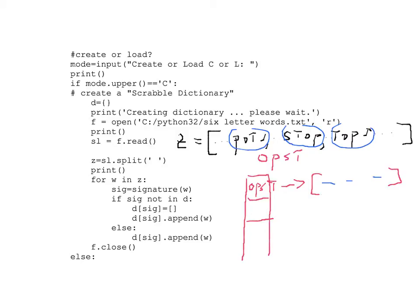So how is this happening? We have list 'Z', which has all those words. We're going to go through this list 'Z' and pick up every one of these words. For each 'W' — that is, for every word in list 'Z' — 'W' is going to be moving to each one in turn: this one, and this one, and all of them.